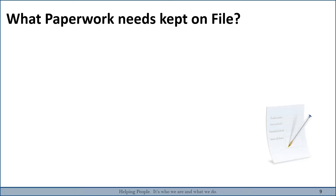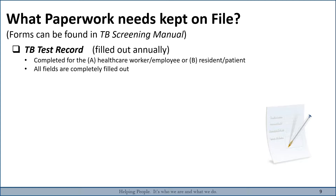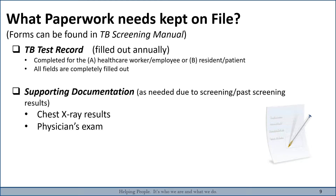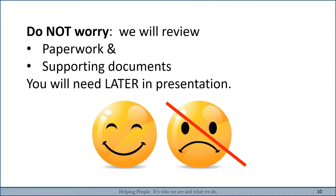What documentation needs to be kept on file? The forms are found in the TB screening manual. First, the TB test record, filled out annually for both healthcare workers and residents with all fields completely filled out. Second, any supporting documentation as needed due to screening or past screening results — for example, a positive TB result would require chest X-ray results and a physician exam. A positive TB signs and symptoms questionnaire is also needed as documentation of past positive TB screening tests, or for a documented diagnosis of TB or latent TB, whether treated or untreated.